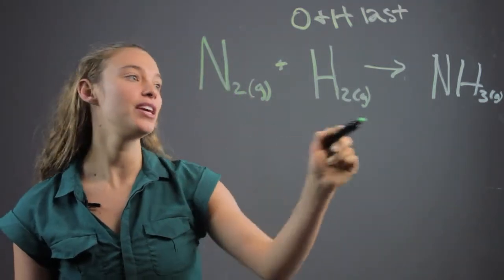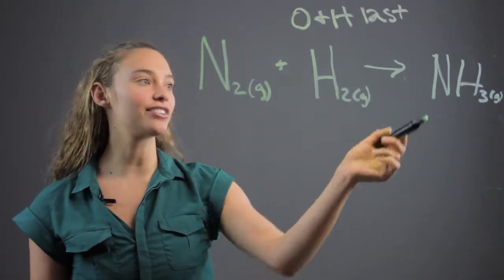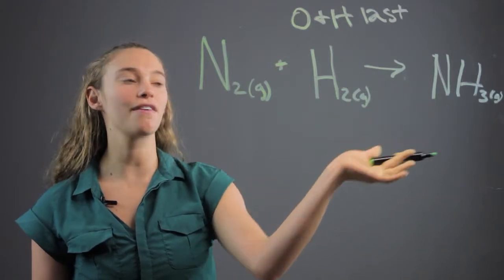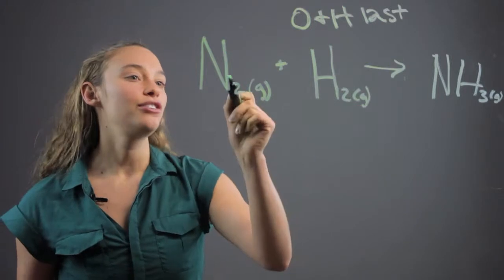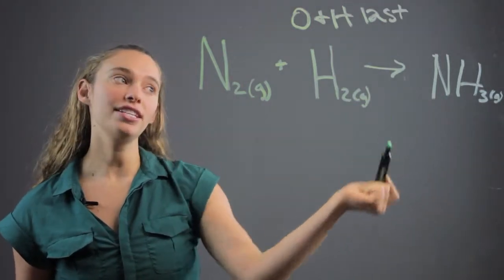And here we only have one nitrogen because there's a one coefficient because there's nothing written there. So, two on this side, one on this side.